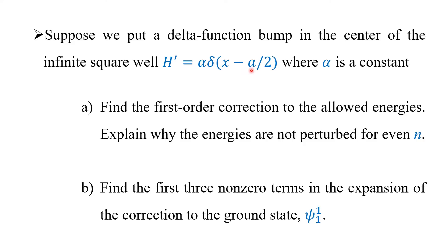Since we are dealing at the middle, this delta function is x minus a/2, where a is the box length, that is the width of the infinite potential well. The first question is to find the first-order correction to the allowed energies and explain why the energies are not perturbed for even n. The second question is to find the first three non-zero terms in the expansion of the correction to the ground state, that is psi_1^(1), the first-order perturbation of the ground state wave function.